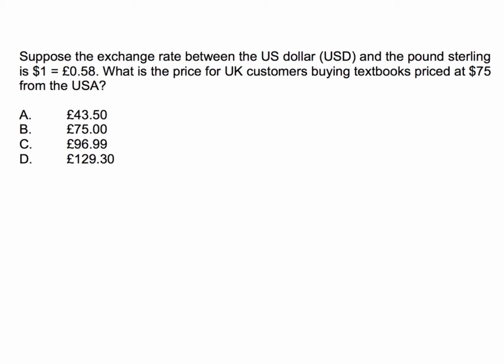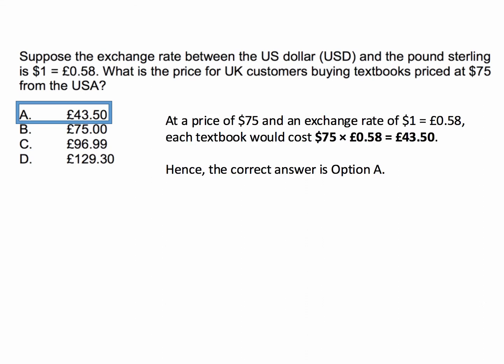The current exchange rate is one dollar buys 58 pence. There's been no change in the exchange rate — we just have to make a simple calculation. A textbook priced at $75 in the United States: what is it going to cost in terms of sterling? The correct answer is £43.50.